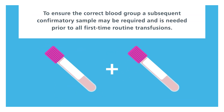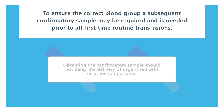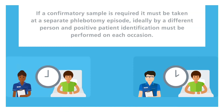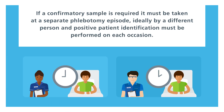To ensure the correct blood group, a subsequent confirmatory sample may be required and is needed prior to all first-time routine transfusions. Obtaining the confirmatory sample should not delay the delivery of urgent red cells or other components. If a confirmatory sample is required, it must be taken at a separate phlebotomy episode, ideally by a different person, and positive patient identification must be performed on each occasion.